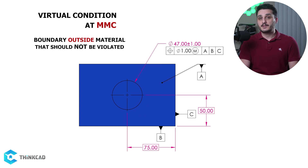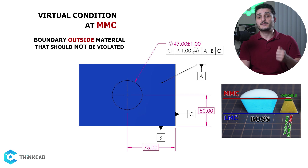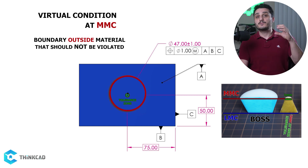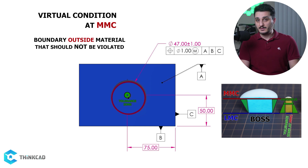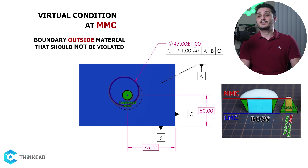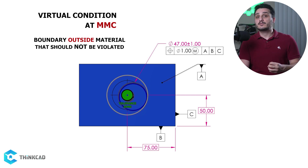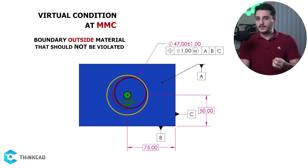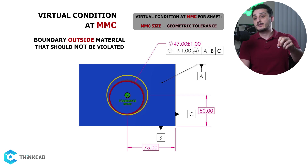If you remember from the MMC-LMC modifiers video, our GD&T callout is basically defining a variable tolerance zone whose value changes based on the size of our feature. The geometric tolerance specified in our GD&T callout is applied at MMC, which in this case is 1mm. As the size gets smaller towards LMC, we gain bonus tolerance the same amount. In order to calculate virtual condition, you add your size at MMC to your geometric tolerance. In this case, virtual condition will be 49 millimeters.